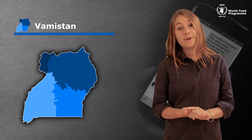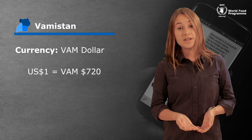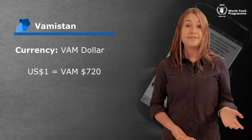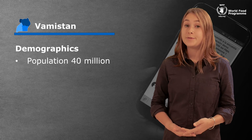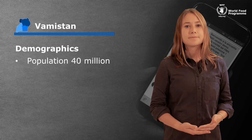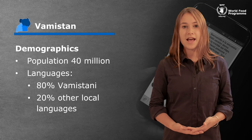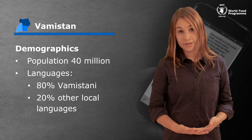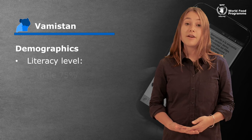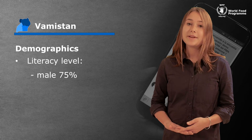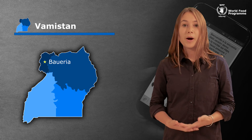Vamistan is a low income country. Its currency is the Vam dollar, which has a current exchange rate of one US dollar to 720 Vam dollars. There are 40 million people living in Vamistan, 85% of whom are based in rural areas. The official language, Vamistani, is spoken by 80% of the population and the remaining 20% speak other minor local languages. There's a gender disparity in terms of literacy levels — roughly 75% of the male population is literate compared with 65% of women. The capital is Baueria.